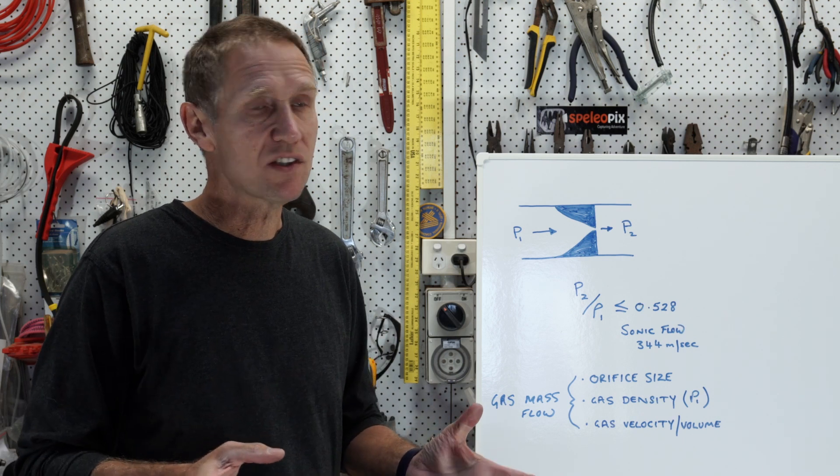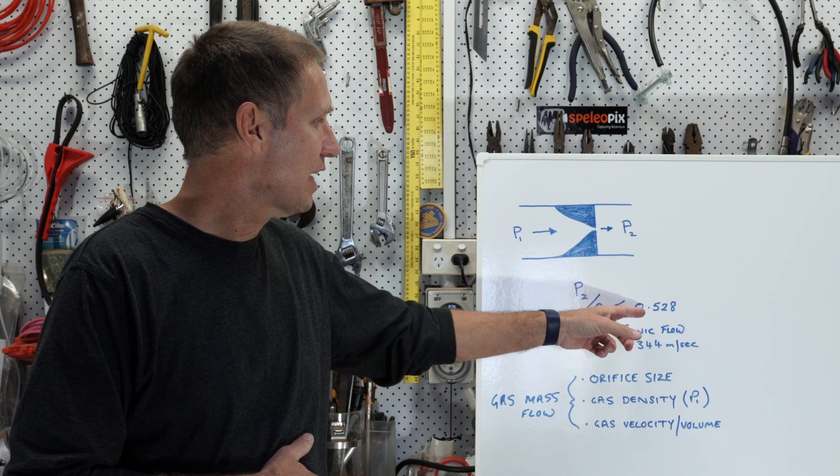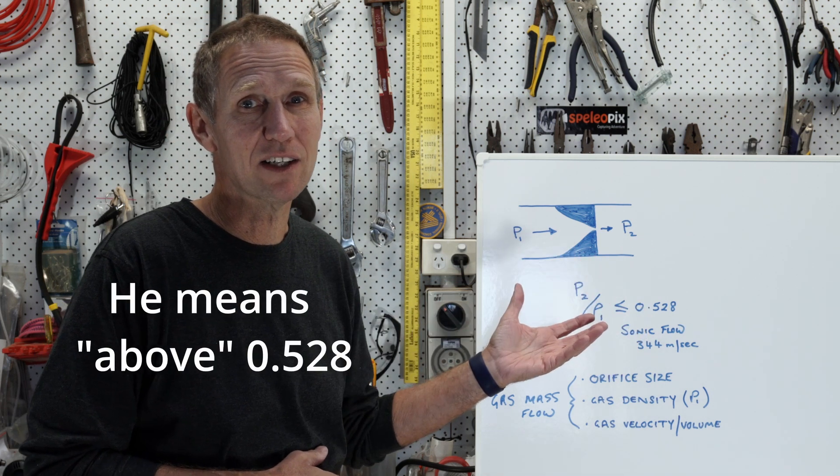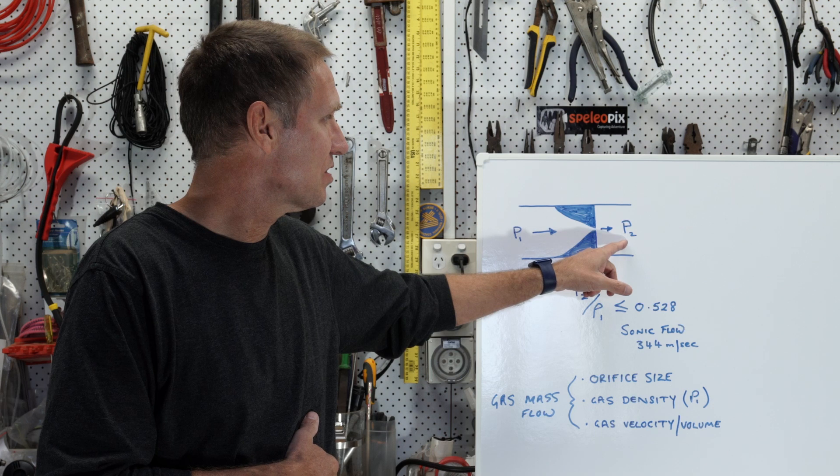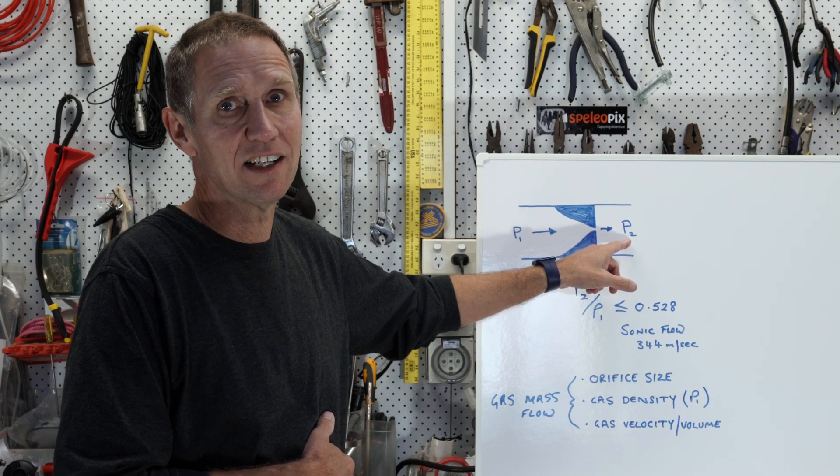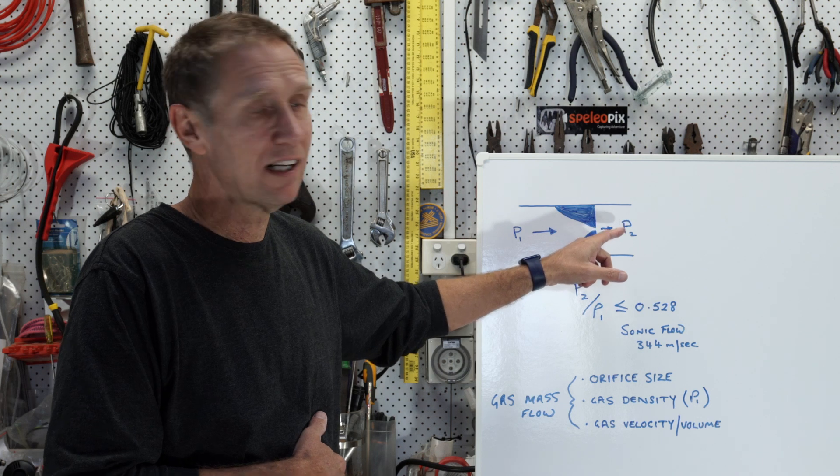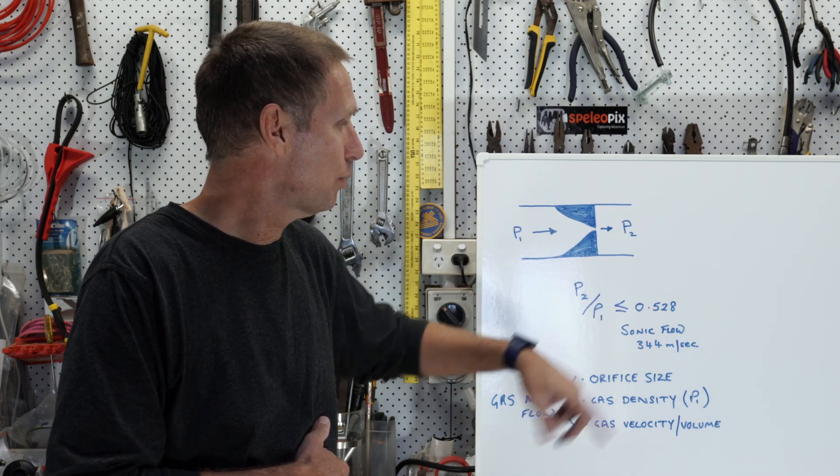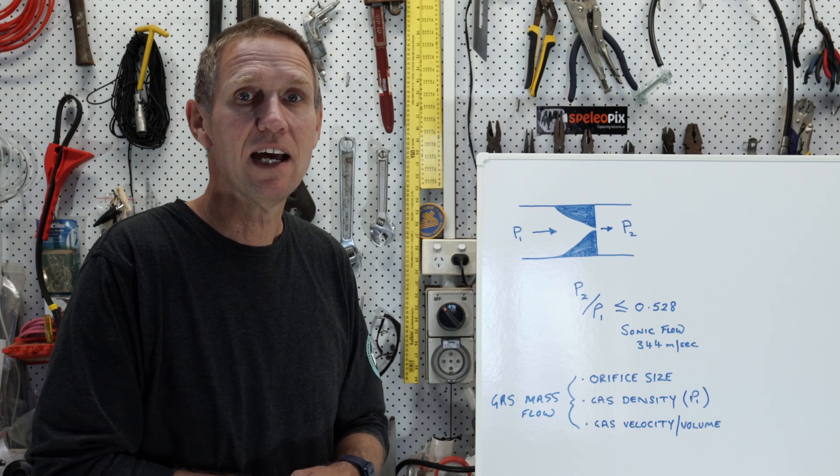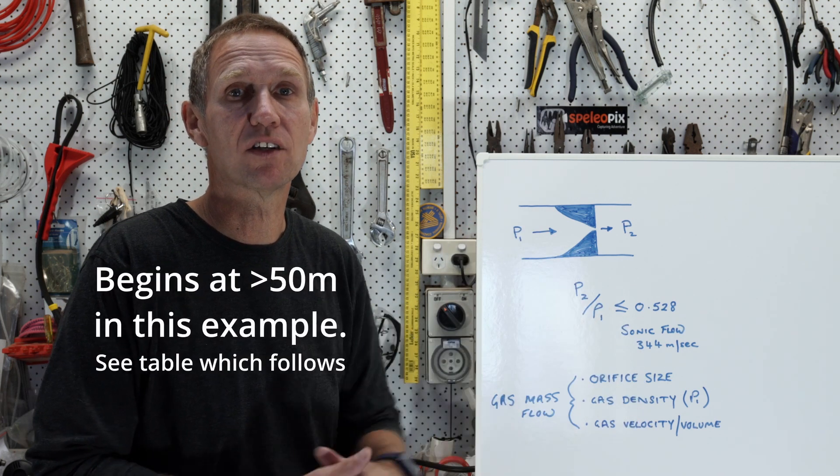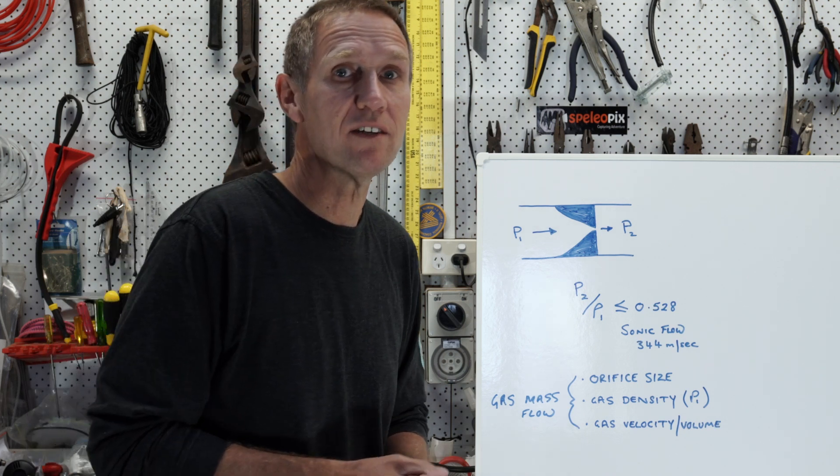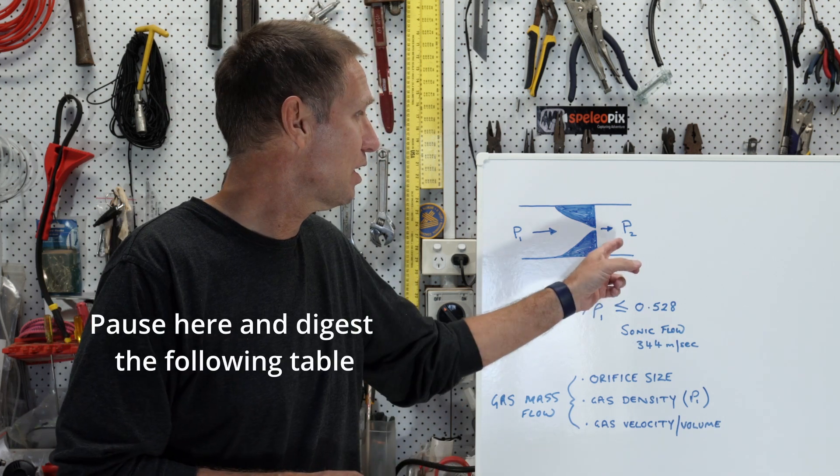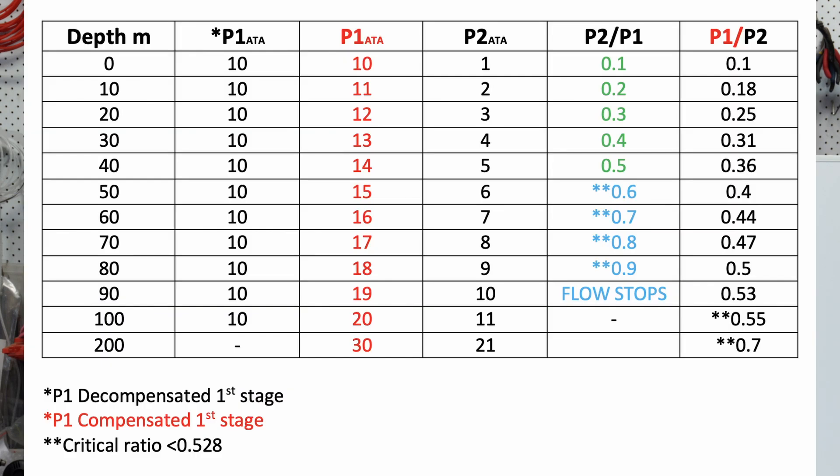The downside of course is that when our ratio actually falls below 0.528, which will start to happen around 60 or 70 meters because of that depth, we still have 10 bar here but suddenly we have 7 or 8 bar on this side, then the ratio now has risen above 0.528 and the flow across the orifice will start to decline and that will become noticeable in terms of the PO2 dropping more rapidly until we reach a point which in this case will be 90 meters where the opposing pressure will be exactly 10, same as the incoming pressure, gas flow will cease and we'll have no oxygen at all.